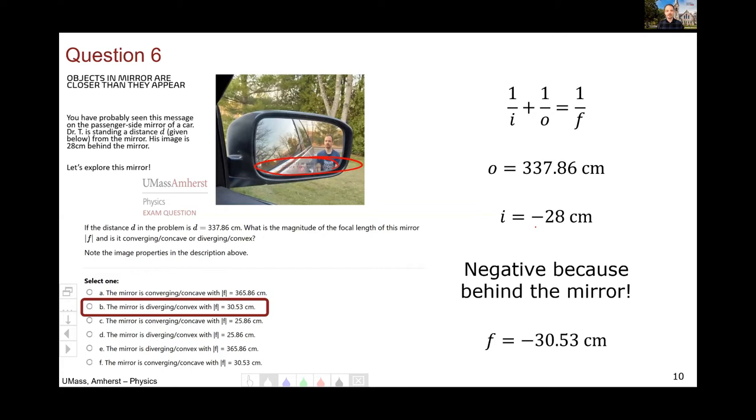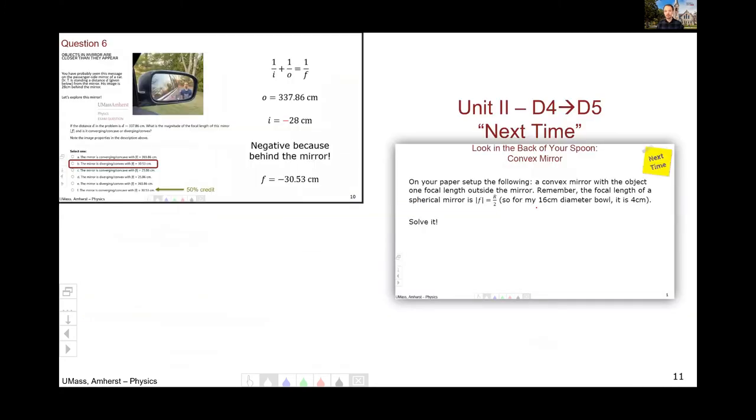So the negative sign tells you that the mirror is diverging or convex. If you misinterpreted this negative sign, I gave you 50% credit. And if instead of using a negative, you used a positive image distance, the answer you get is 25.86 centimeters. And if you thought about it and interpreted what you were seeing and saying it's still a diverging or convex mirror, I gave you 50% credit for that. There were quite a few mirror problems related to this. The closest example is the day four to day five next time problem from unit two where it was looking in the back of a spoon.